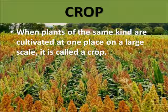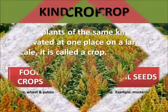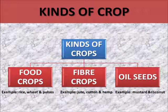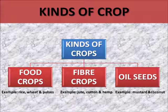Next, there are different types of crops. The first one is food crops, then we have fiber crops, and last we have oil seeds. The examples of food crops are wheat, rice and pulses. Examples of fiber crops are jute, cotton and hemp.